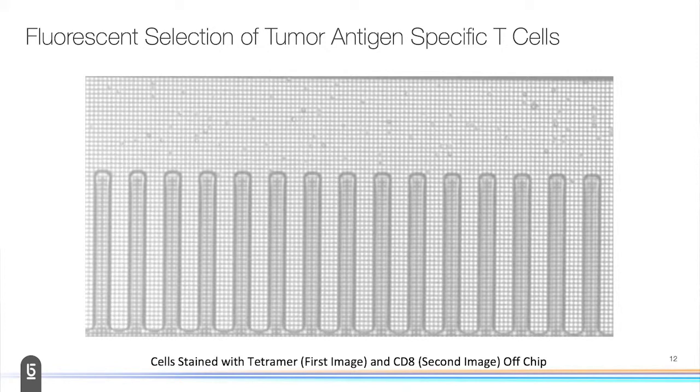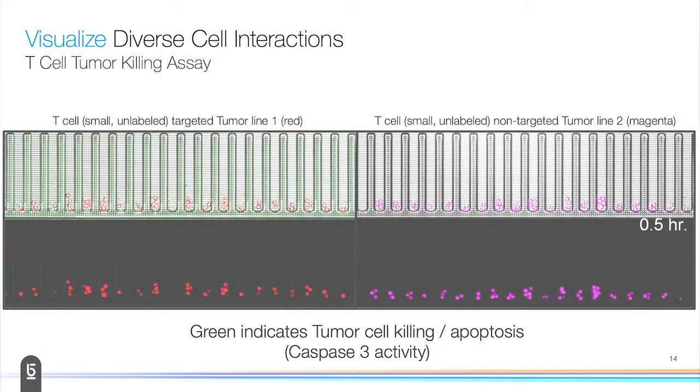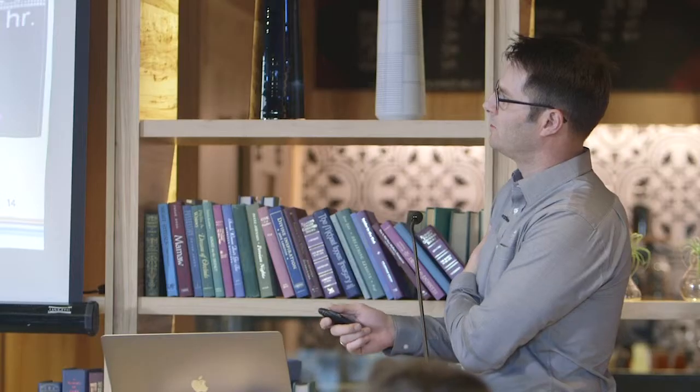Once we get these cells loaded, the next thing we're really doing is focusing on visualizing these diverse cell interactions. The first vignette we'll talk about is a tumor killing assay that we developed. To set this up—this is one of the first assays we did—on the left you can see we have T cells. They're not labeled, so you actually can't see them very well in this image. Then we have multiple tumor cells that are labeled in red.